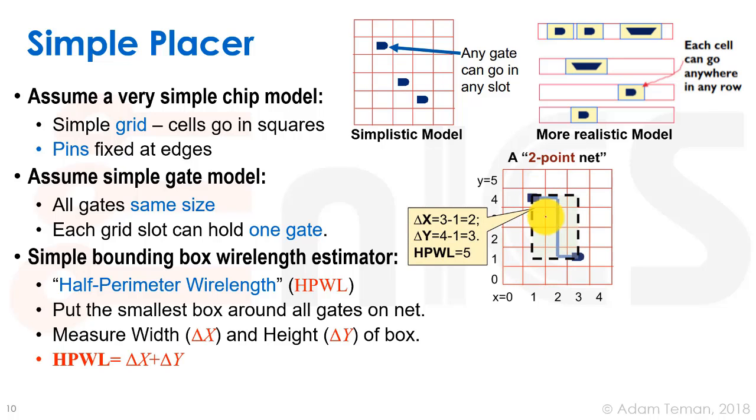How do we use the half perimeter wire length? We look at our cells and put a bounding box that contains every single cell that's on that net, and we look at the half perimeter of this bounding box. The half perimeter is basically taking the difference in the x-axis plus the difference in the y-axis, or exactly taking the perimeter and dividing it by two - that's why it's half perimeter wire length.